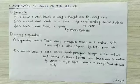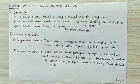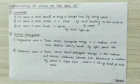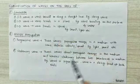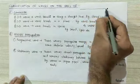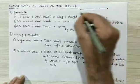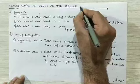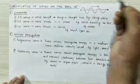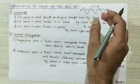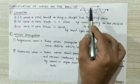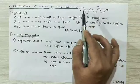Now we will see the classification of waves — first, on the basis of dimension. Waves are classified into three types: one-dimensional wave, two-dimensional wave, and three-dimensional wave. In a one-dimensional wave, the wave travels along a straight line. The example is a string wave: one end is fixed, the other is free; if we do simple harmonic motion to the free end, a wave generates, and this is a one-dimensional wave because the wave is travelling along a straight line.